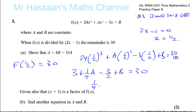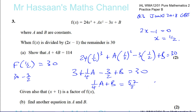Rearranging: a/4 + b = 30 − 3 + 3/2 = 30 − 3/2, which gives 57/2. Now we multiply everything by 4 to clear the fraction, giving a + 4b = 57 × 2.